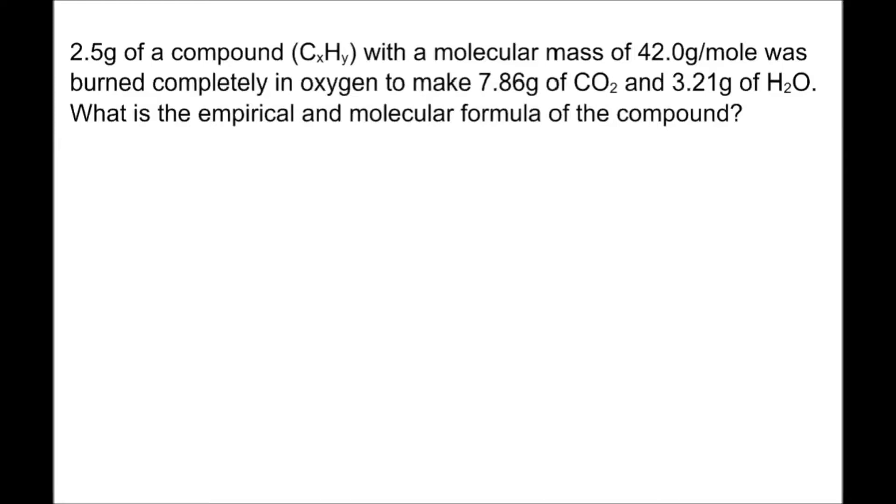We start with hydrogen. Hydrogen compared to carbon is 0.356 divided by 0.1786, which comes out to a number very close to 2. This means we have two hydrogens for every one carbon, and our empirical formula is CH2.